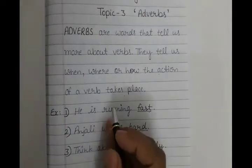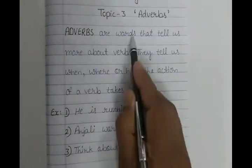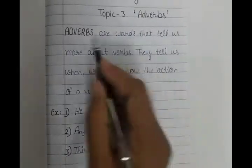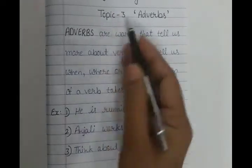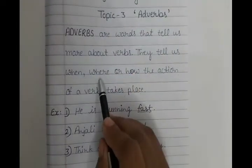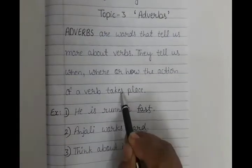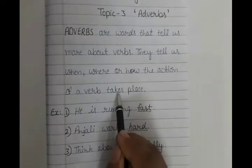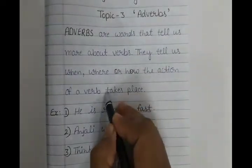So let's continue now with adverbs. Adverbs are words that tell us more about verbs. Adverbs word होते हैं जो हमें verb के बारे में और ज़्यादा बताते हैं. They tell us when, where, and how the action of a verb takes place. कब, कहाँ और कैसे, verb ने किसी sentence में place लिया है, वो हमें adverb के ज़रिए पता चलता है.